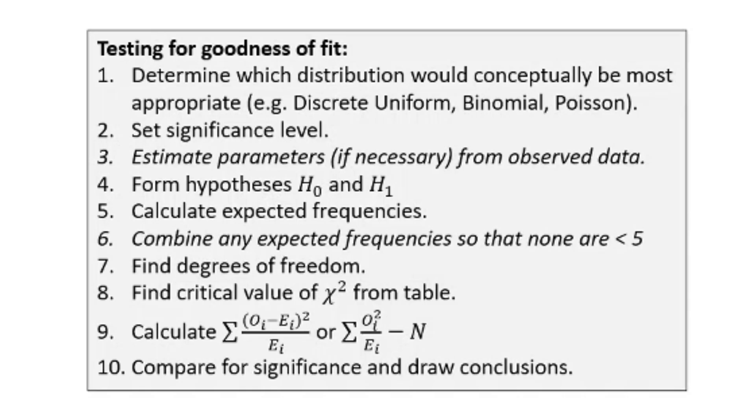There should be many similarities to all the hypothesis tests you've conducted before. Our first step would be to determine which distribution would be most appropriate - discrete uniform, binomial, or Poisson. Second step is to set the significance level. Third, estimate parameters. Fourth, state your hypotheses. Following that, calculate expected frequencies, combine any frequencies less than 5, then find degrees of freedom and critical value from tables, and calculate the test statistic.